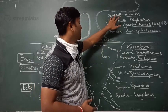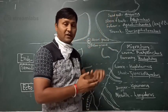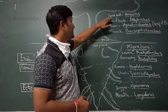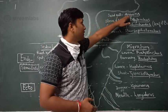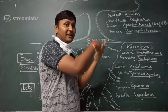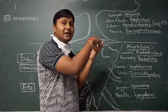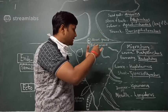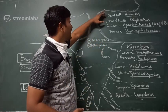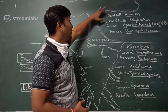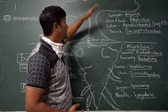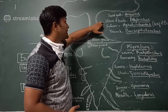The first plant parasitic nematodes ever reported — by Needham — are the seed gall nematodes, Anguina. They feed on the foliar parts, specifically the ear head of wheat crops. They are therefore considered foliar nematodes and are classified as above ground plant part feeders.